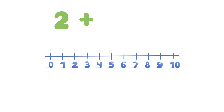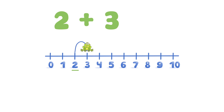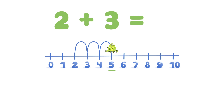Two plus three. The frog starts at two and then moves three places to the right. The frog lands on five, so two plus three equals five.